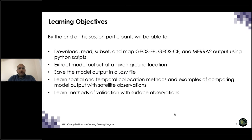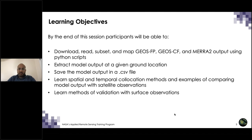Here are our learning objectives for today's session. After this presentation, we expect you to be able to download, read, subset, and map various outputs from NASA's GEOS model using Python scripts. We will also look at how to extract data at a given ground location, save model outputs in a more user-friendly CSV format, and learn spatial and temporal collocation methods — including comparing model output with satellite data and performing validation analysis with surface observations.